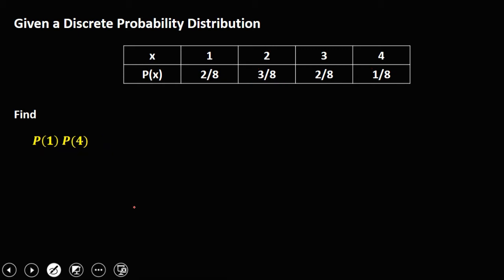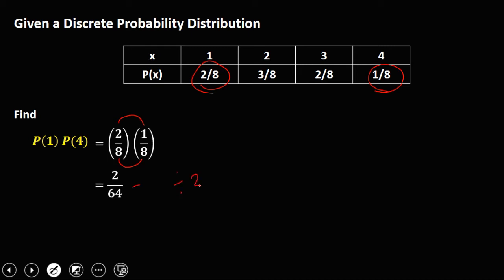For the product of P(1) and P(4): P(1) is 2 over 8, times P(4), that's 1 over 8. Multiply the numerators and multiply the denominators, so that's 2 over 64. Reducing — divisible by 2 — so the probability of the product of P(1) and P(4) is 1 over 32.